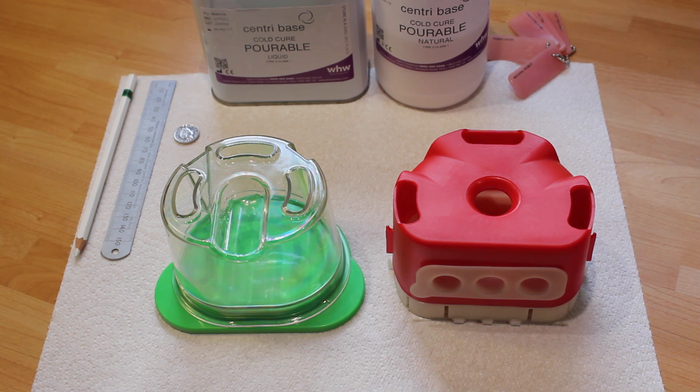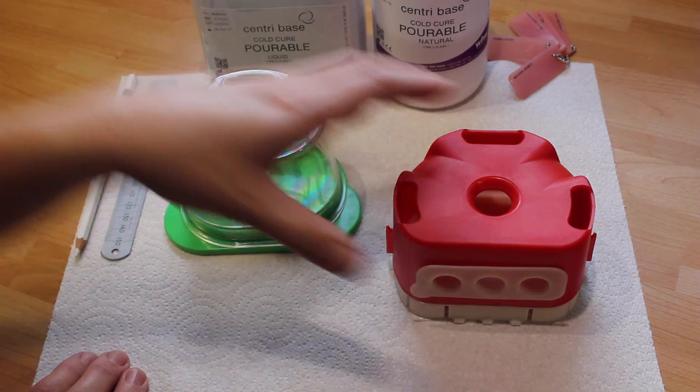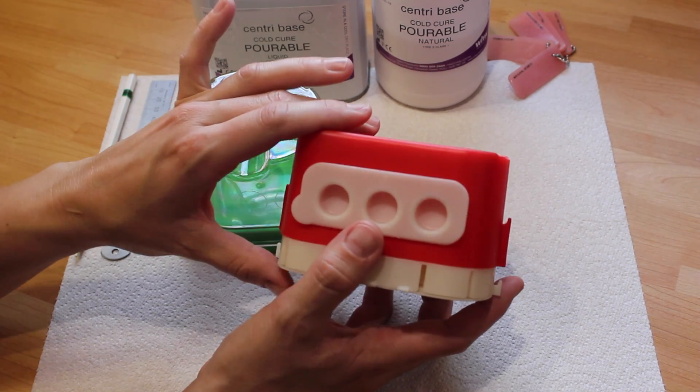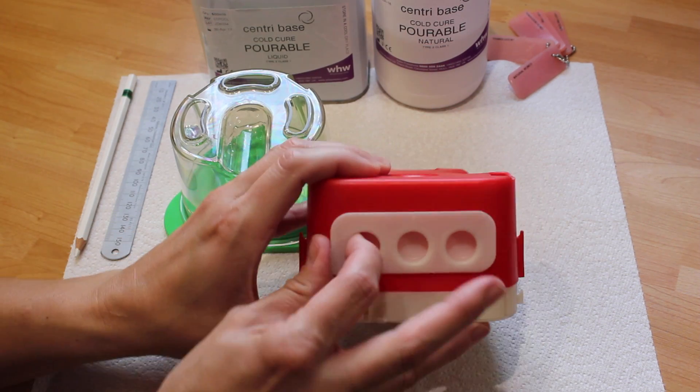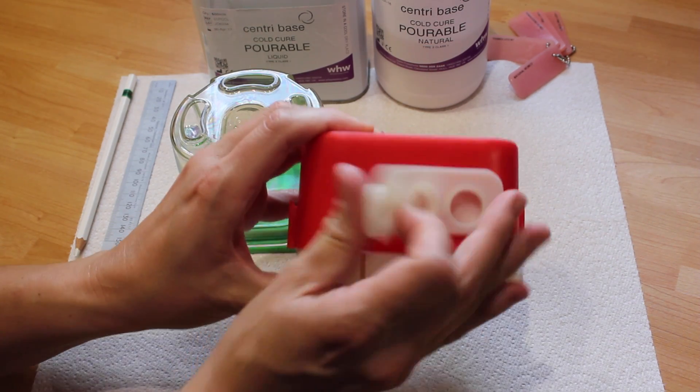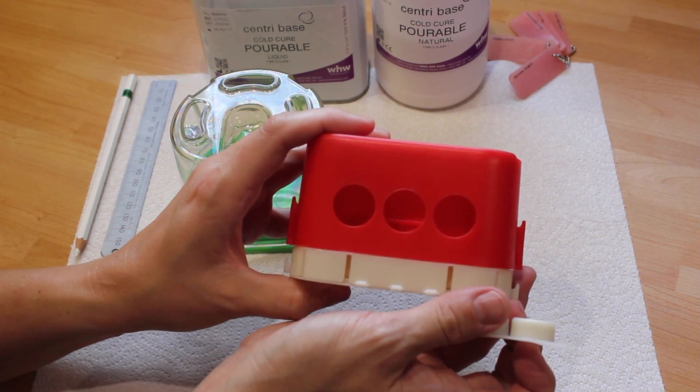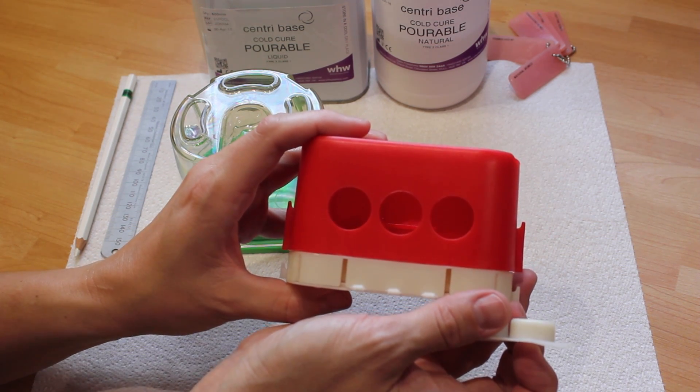Welcome to this WHW video of flask customization for pourable acrylic. You can purchase a custom-made flask like this one which is just like a standard duplicating flask but with the addition of three holes in the back to allow access to your pour channels.